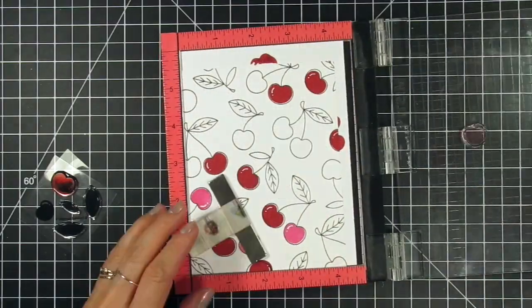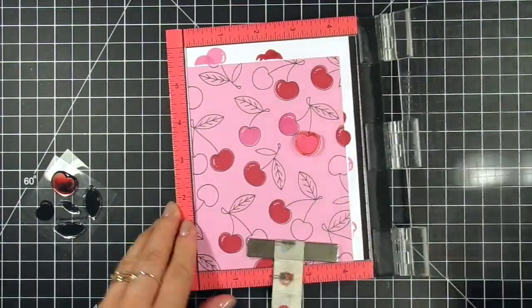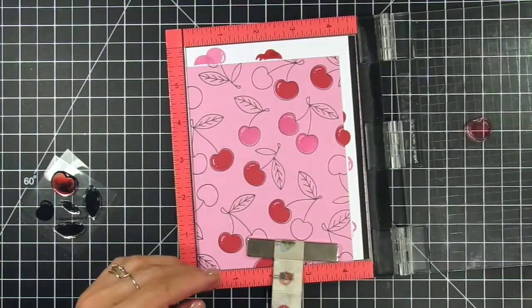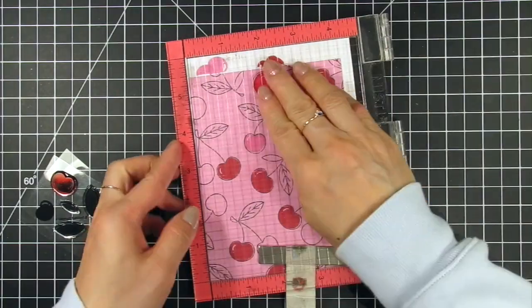After all the large cherries are stamped I switched to the small cherry which I stamped with strawberry milkshake ink. I hadn't used much of this color before but it's literally the most perfect shade of pink. Not too chalky and it looks amazing with cherry pop.